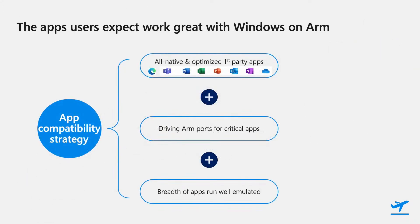Next, we'll look at the application compatibility strategy for Windows on ARM. Emulation is a key element of our AppCompat strategy, and Windows has invested heavily in improving emulation performance with each release. While most apps work fine under emulation, some apps need to be ported as ARM native due to dependencies on kernel drivers or performance considerations. Because of this, we've developed a three-pronged approach: first, ensure all inbox and first-party apps provide an ARM native experience; second, work with app developers to drive native ports for critical categories like security, VPN, accessibility, and video conferencing which typically have kernel drivers; third, improve emulation efficiency with each Windows release to ensure a broad set of applications run well under emulation.